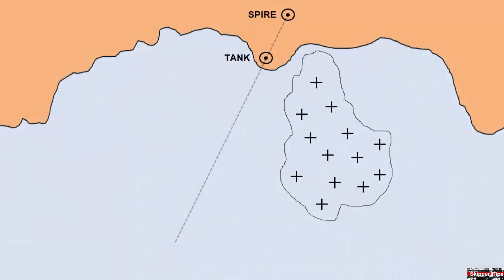Set up a transit as a designated danger mark. Here you can see we've set up two natural objects. We want to be sure to stay to the left side of this line to avoid drifting down on the dangerous shoals to starboard.